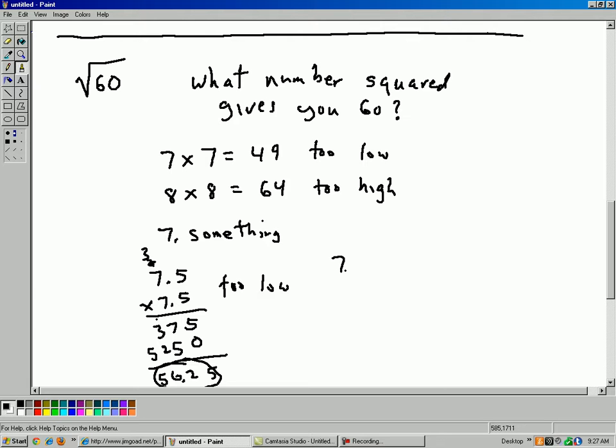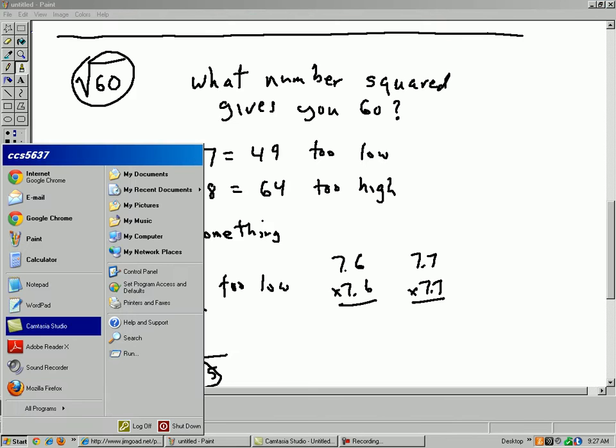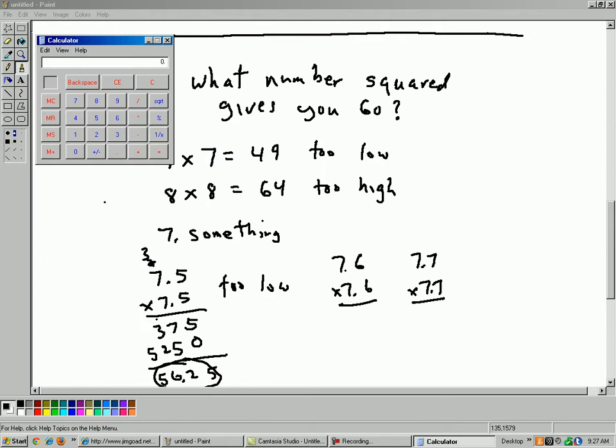So you could try, you know, 7.6 times 7.6 and see what that gives you. And if that doesn't work, you could try 7.7 times 7.7 and so on. So you can see that trying to figure out what number times itself is going to give you exactly 60 is very time-consuming. So usually for this, we just use a calculator. So the computer has a handy calculator here. Let's go to a calculator.